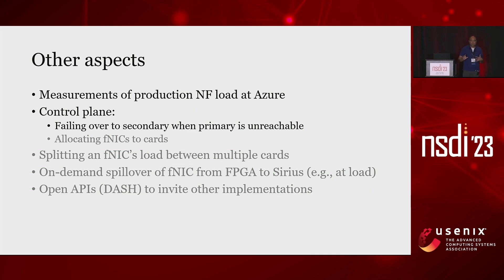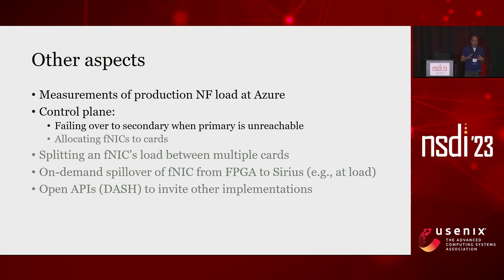A couple of other things in the paper worth highlighting: we have production measurements of network function load in Azure over a long period of time — please take a look. We also have a more nuanced description of how failover is handled when a primary card fails and how we can do this quickly without losing a lot of context.